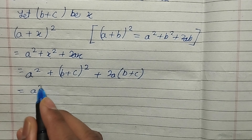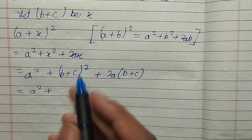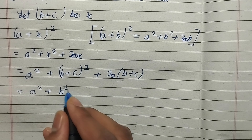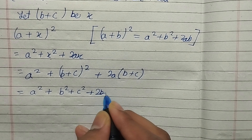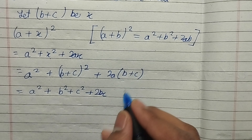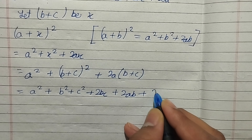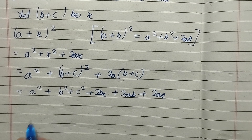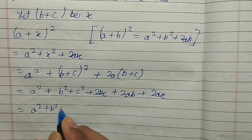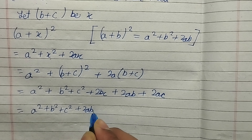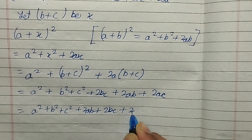This gives us a² + (b + c)². Now (b + c)² is again in the form (a + b)², so it expands to b² + c² + 2bc. And 2a(b + c) gives 2ab + 2ac. We then rearrange the terms to get a² + b² + c² + 2ab + 2bc + 2ca.